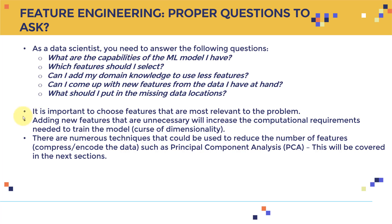It's important to choose features most relevant to the problem. Adding unnecessary new features will increase the computational requirements needed to train the model — that's what we call the curse of dimensionality. You need to make sure you're not just collecting a bunch of data and feeding it into the model without understanding what's happening and without removing unnecessary columns.